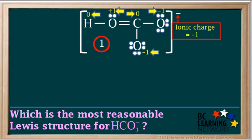And the net ionic charge on the ion is also negative 1. So the formal charges add up to the net charge on the ion, which should always happen.